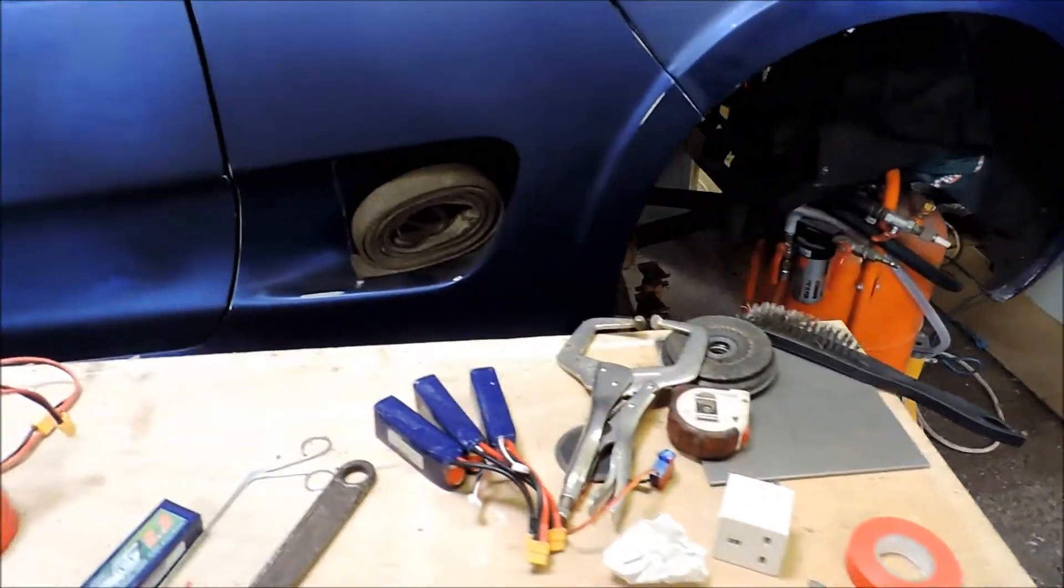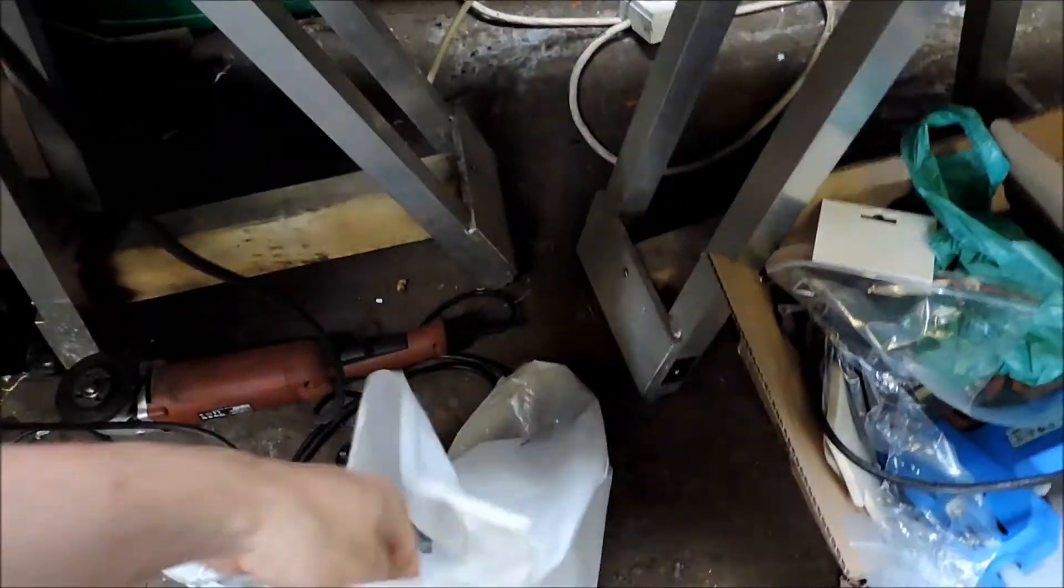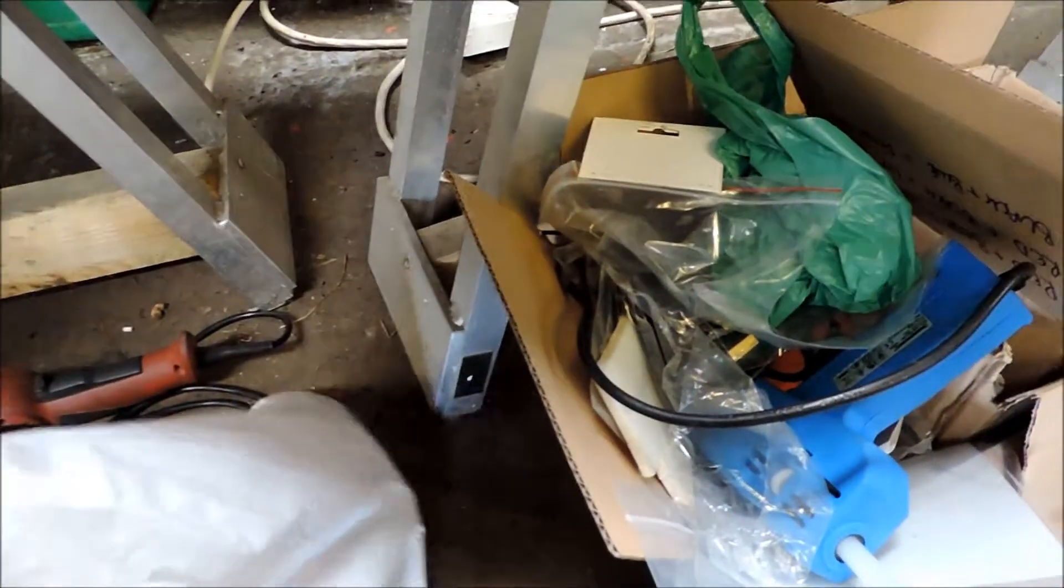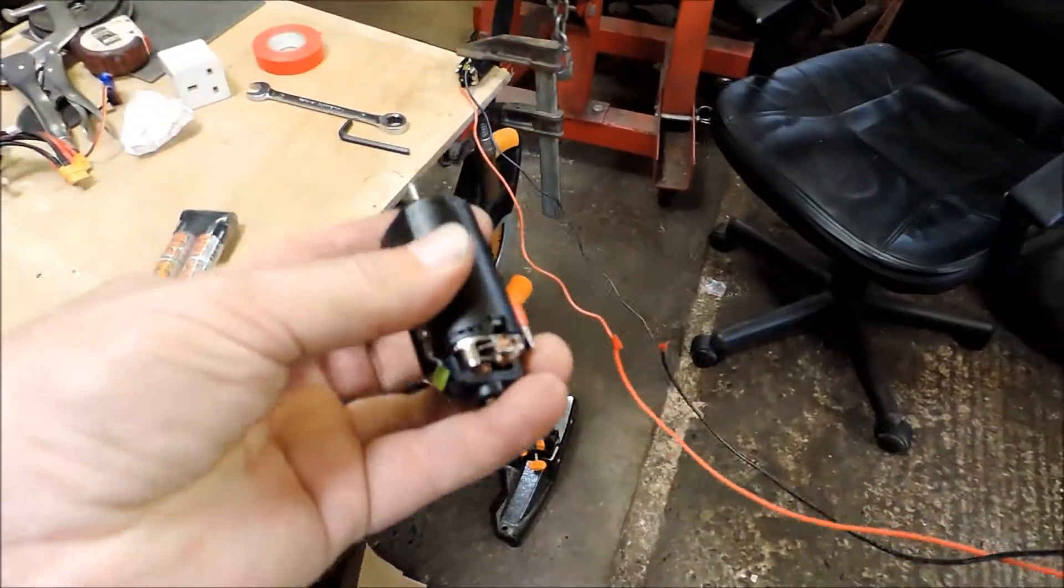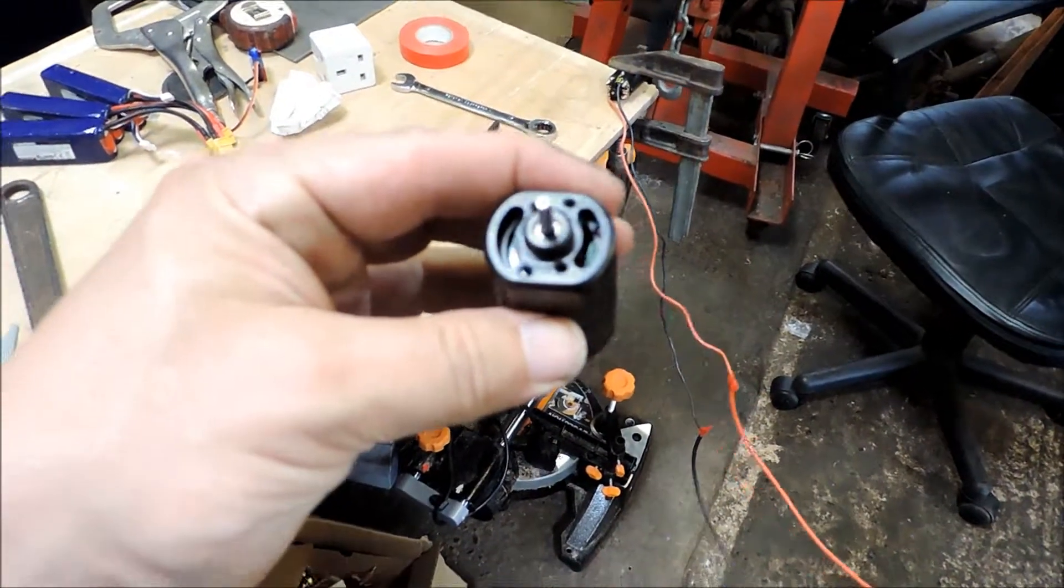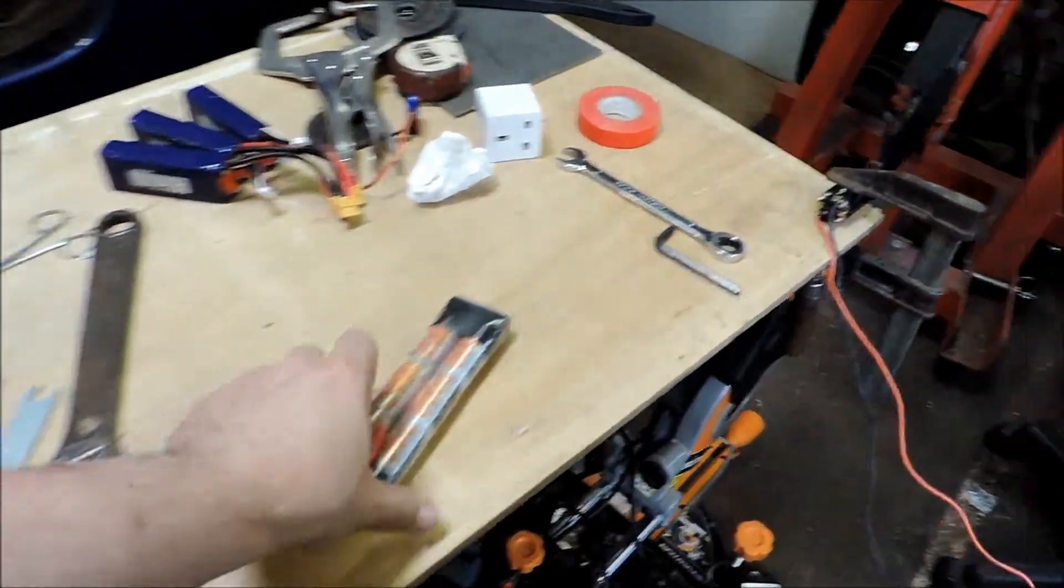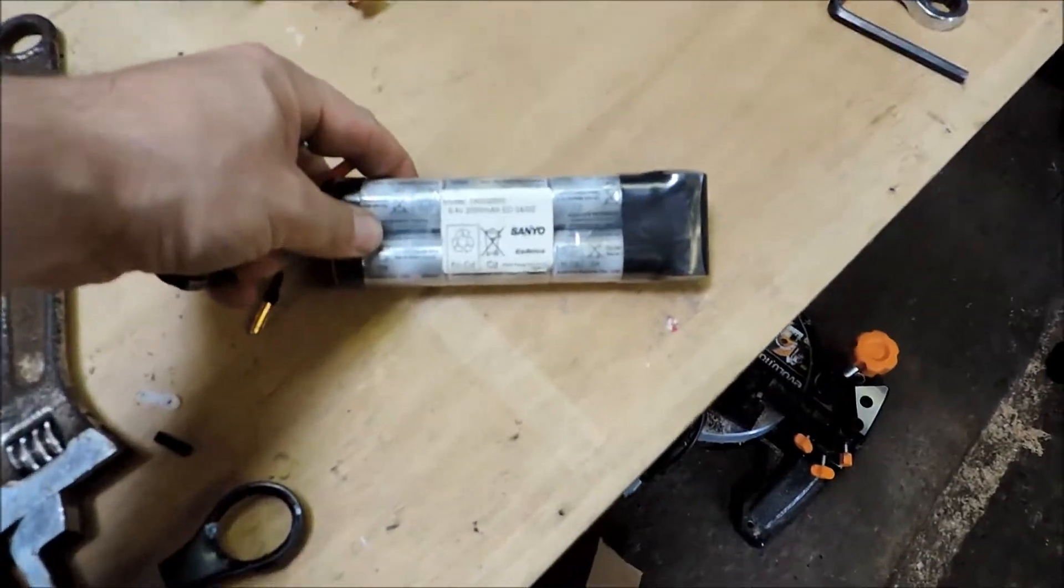So what we've got here is we've got, well we've got another one actually. Where's the other motor? So what we've got is an old brushed motor here that used to run in a little EDF unit. Ran off this NICAD.